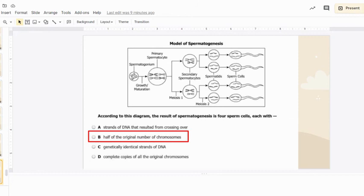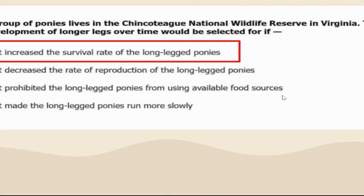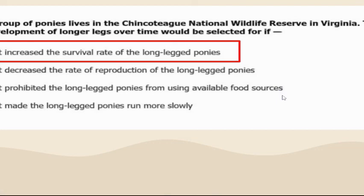Ponies living at Chincoteague — the development of longer legs would be selected for if it increased the survival rate. We want to select for traits that help survival.